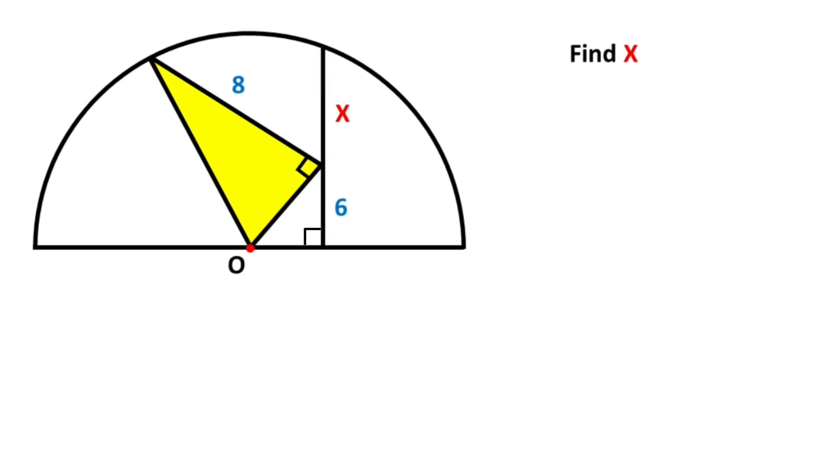We need to find x. First step, let's call this length a and this length b. For this triangle, if we apply the Pythagorean theorem, we get a² + 6² = b².